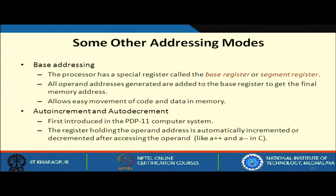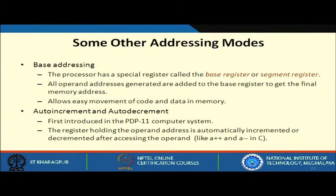There are other addressing modes like base addressing mode. In base addressing mode, the processor has a special register called a base register or segment register. All operand addresses generated are added to the base register to get the final memory address. For example, if the processor generates address 00123 and the base register holds 1024, then 1024 is added to get the exact address. This allows easy movement of code and data in memory.